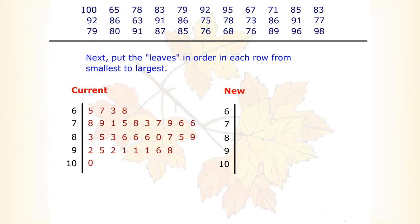Next, put the leaves in order in each row from smallest to largest. Be sure to include duplicate numbers.